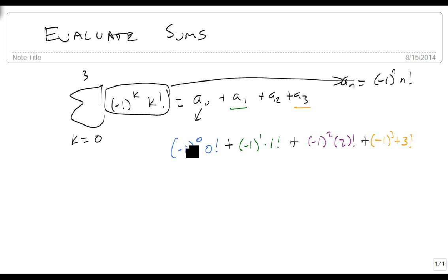And when we evaluate all these, anything to the 0 is 1 and 0 factorial is 1, so this becomes 1 times 1 plus minus 1 times 1 plus 1 times 2 times 1, which we don't need to worry about, plus minus 1 times 3 times 2.